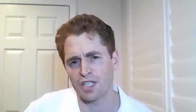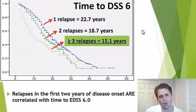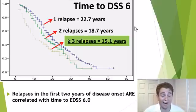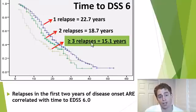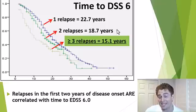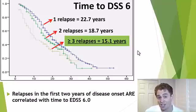Early in the disease, relapses do correlate with worse long-term disability. In a study on time to DSS-6 on the Expanded Disability Status Scale — where 6.0 means a cane is required to walk 100 meters or more — people who had one relapse took 22.7 years on average to require a cane; those with two attacks took 18.7 years; and those with three or more attacks took 15.1 years — a 7.6-year difference in walking unassisted, very significant. So stopping early attacks may improve prognosis.